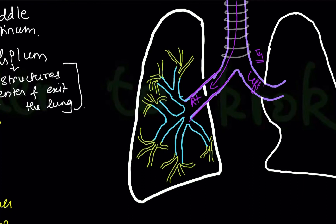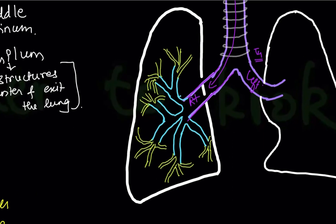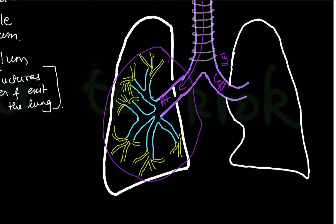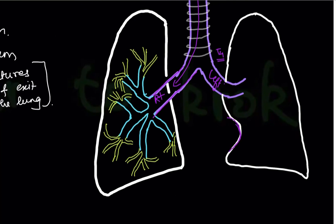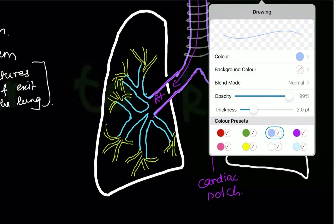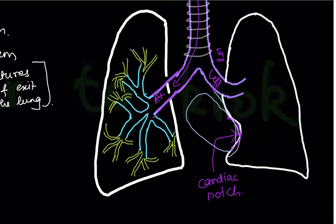In the alveolar sacs, the epithelium changes to simple squamous epithelium, because diffusion must take place and the simplest epithelium in the body is simple squamous. The entire branching structure is called the bronchial tree, as it resembles a tree with branches. In the left lung, there is an inward bulge called the cardiac notch, present only in the left lung because the heart is situated there and the heart's apex makes the lung bulge inward.